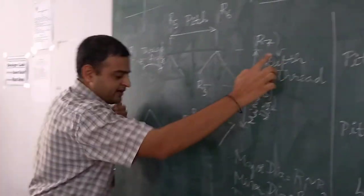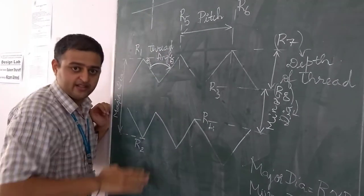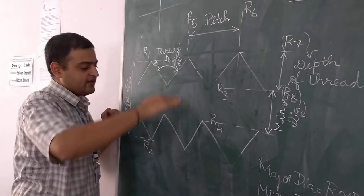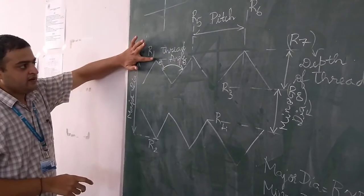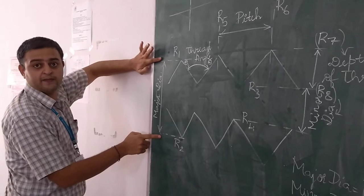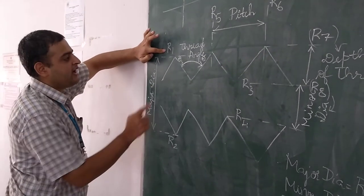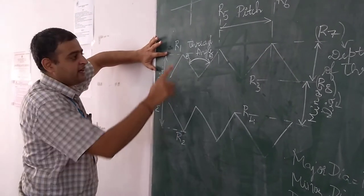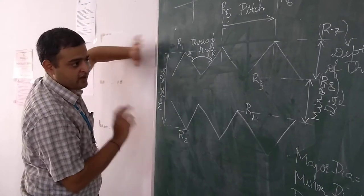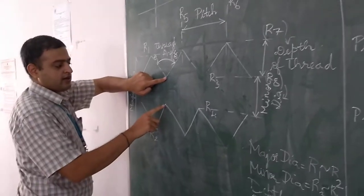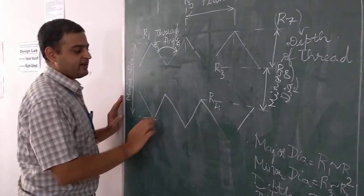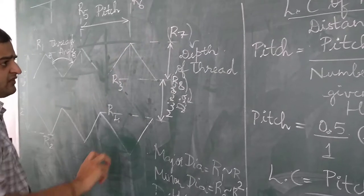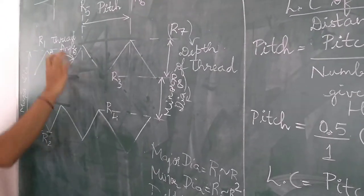The instrument has cross wires. When you move the cross wires with the help of the moving micrometers provided on the work table, the cross wires keep on moving. When you measure the crest-to-crest distance, it is called the major diameter. The reading of the micrometer when touching the upper crest is R1, and when touching the lower crest is R2. Taking the difference gives the major diameter. Similarly, to find the minor diameter, we find the root-to-root parameters — R3 and R4 — and take the difference. The depth is calculated by taking the difference between R1 and R3.